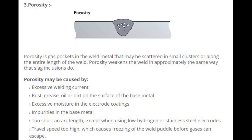Number 3: Porosity. Porosity is gas pockets in the weld metal that may be scattered in small clusters or along the entire length of the weld. Porosity weakens the weld in approximately the same way that slag inclusions do. Porosity may be caused by: excessive welding current, rust, grease, oil, or dirt on the surface of the base metal, excessive moisture in the electrode coatings, impurities in the base metal, too short an arc length (except when using low hydrogen or stainless steel electrodes), and travel speed too high, which causes freezing of the weld puddle before gases can escape.